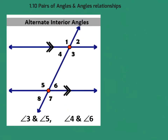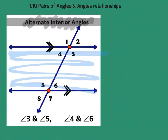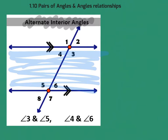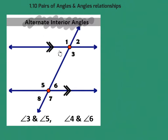More angle relationships are hidden in this transversal with two parallel lines. The first group is called alternate interior angles. Interior means you are on the inside of the parallel lines — only angles 3, 4, 5, and 6 qualify. Alternate means you are on alternating sides of the transversal. So angles 4 and 6 are alternate interior angles.